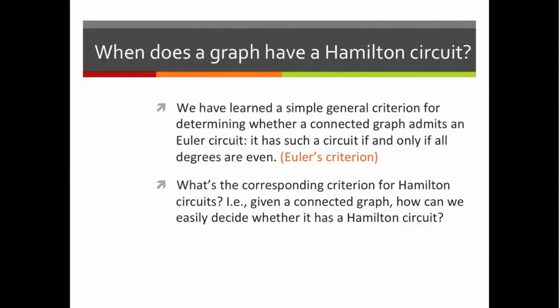Now, when we were looking at Euler circuits, we asked, how can we look at a graph and tell whether it has an Euler circuit? And we found a very nice answer. We learned a simple general criterion for determining whether a connected graph admits an Euler circuit. It went like this. Such a graph, a connected graph, has an Euler circuit if and only if all degrees are even. Now, that's a very simple, easy to check criterion. It's called Euler's criterion.